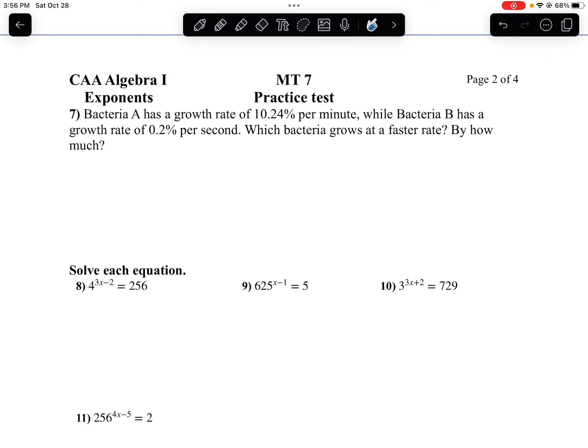On question 7, it's not really a geometric sequence that we're concerned with in this question. The one thing to notice is bacteria A is per minute and bacteria B is per second. We can't compare them unless they have the same thing. I always think it's easier to change the smaller one to the bigger one. So I'm going to do 0.2% per second and change that to percent per minute.